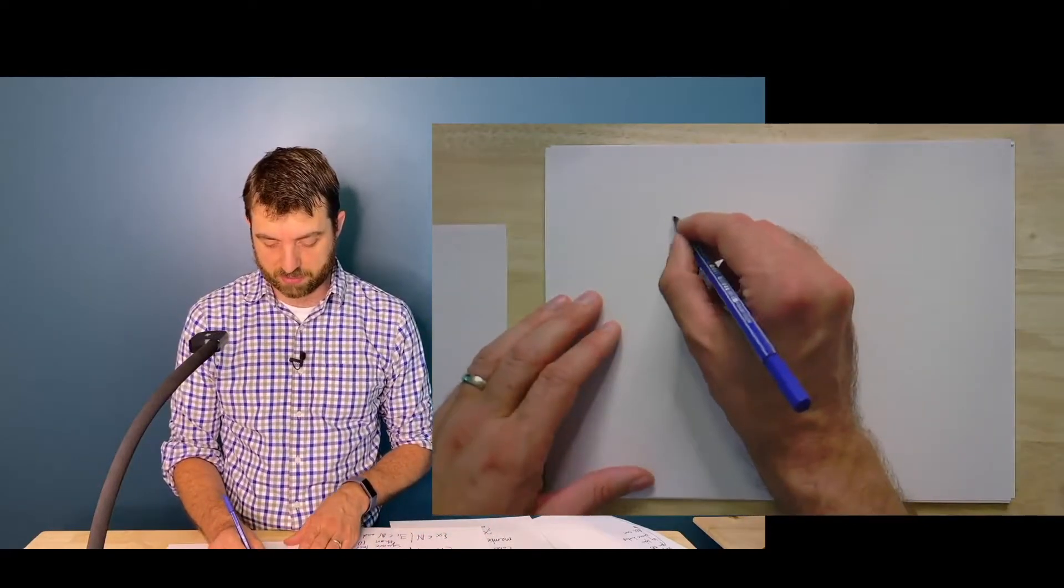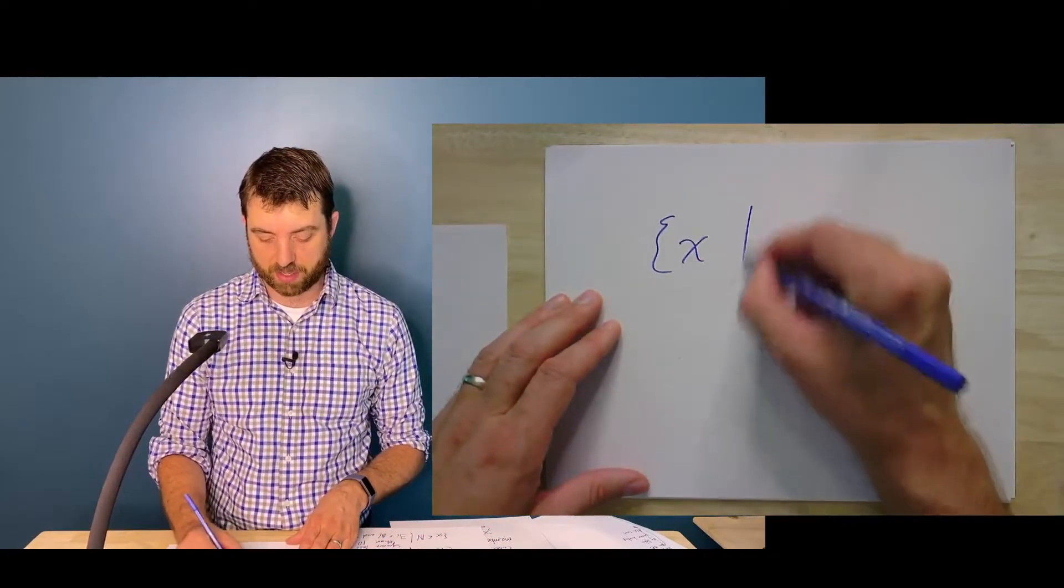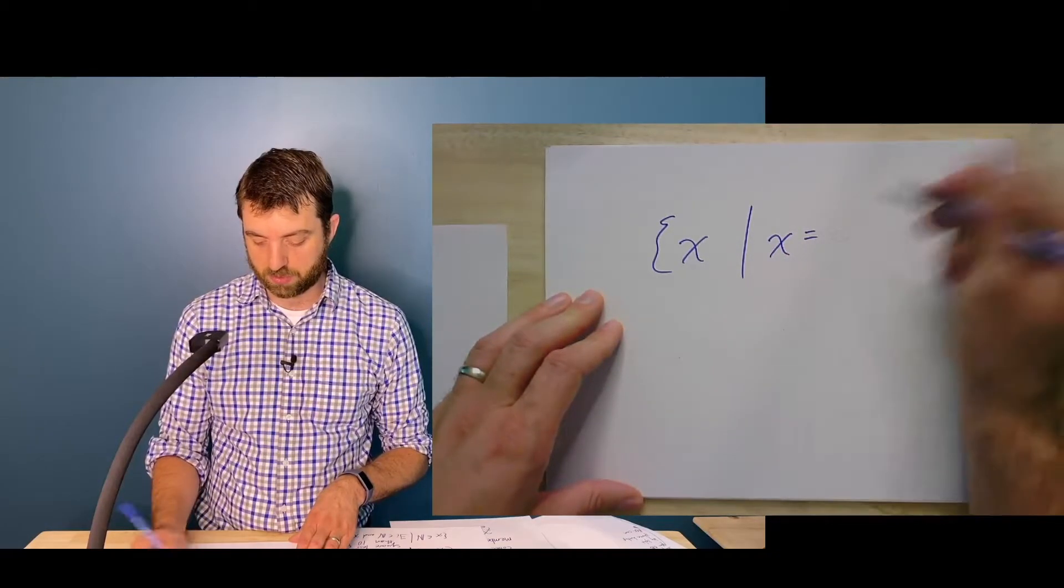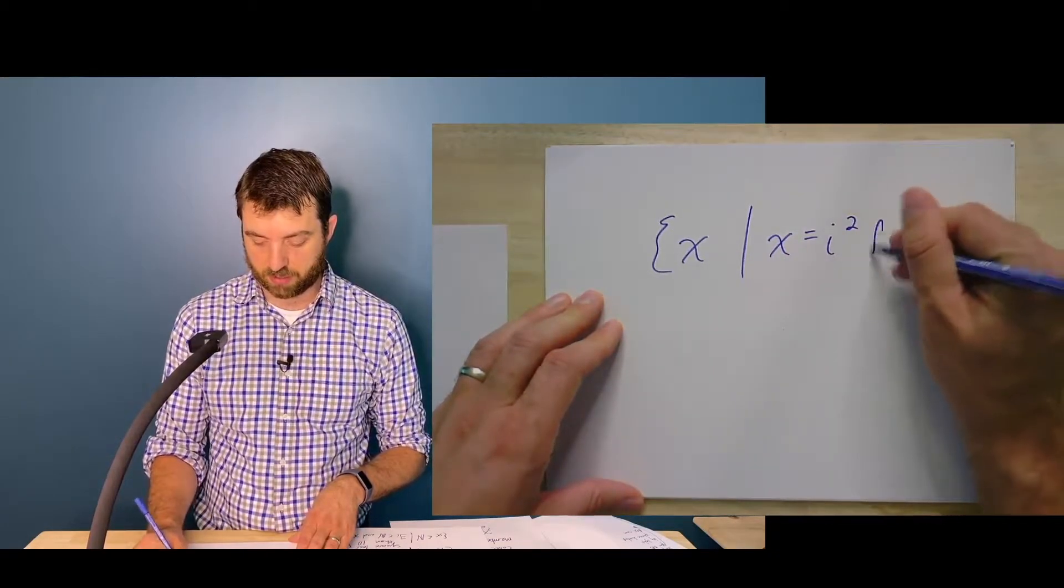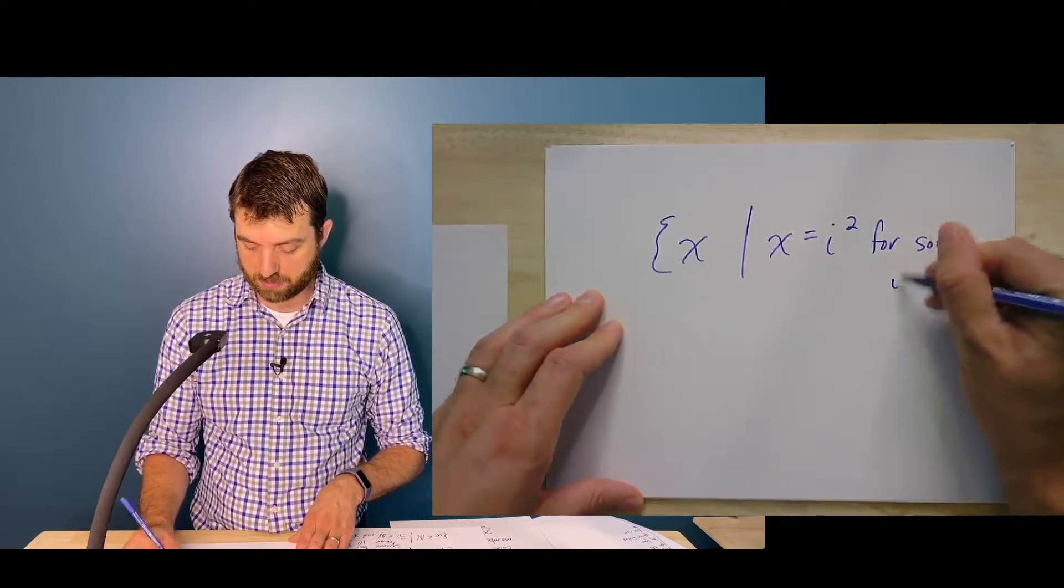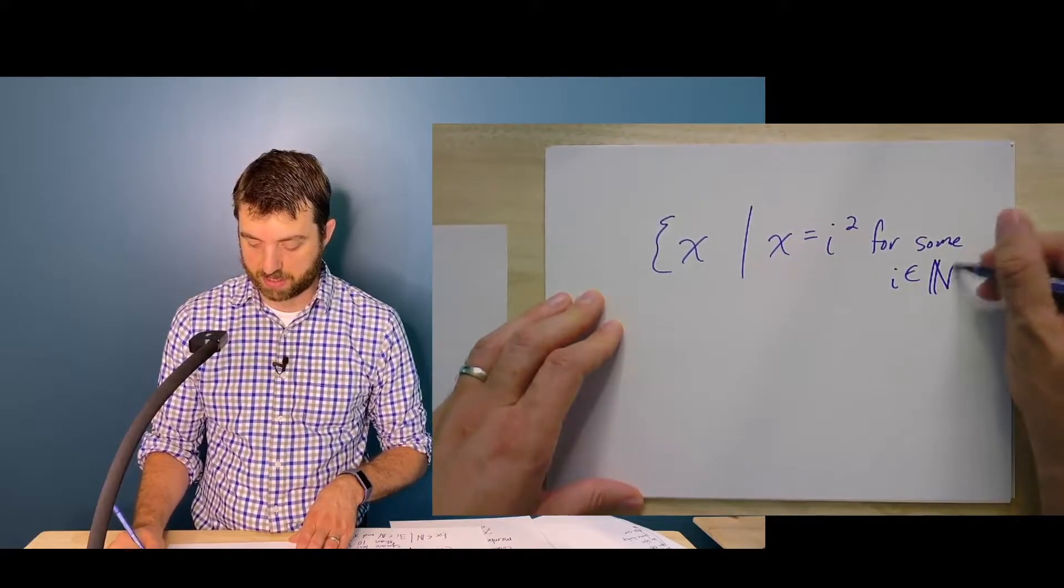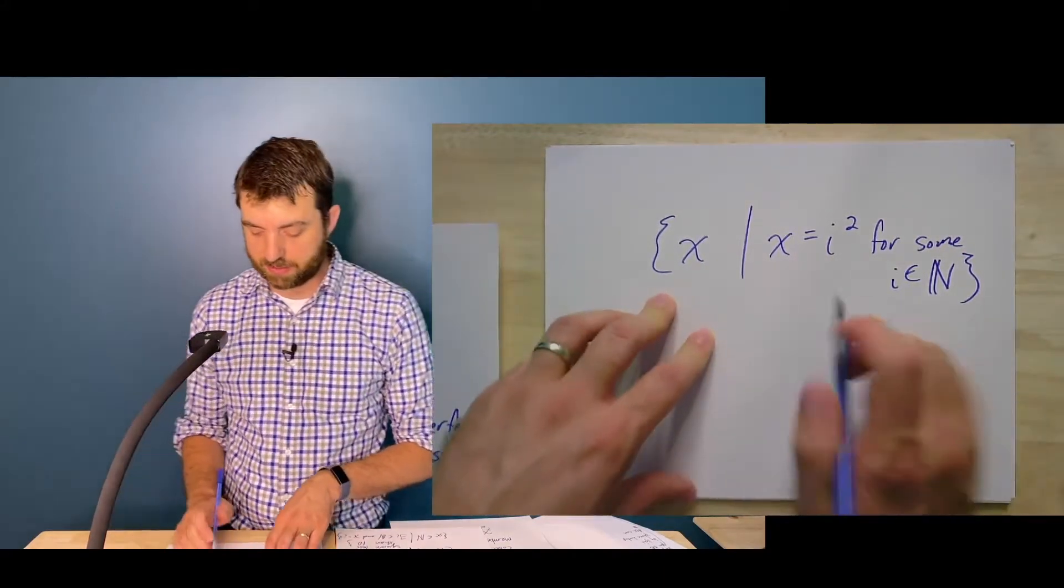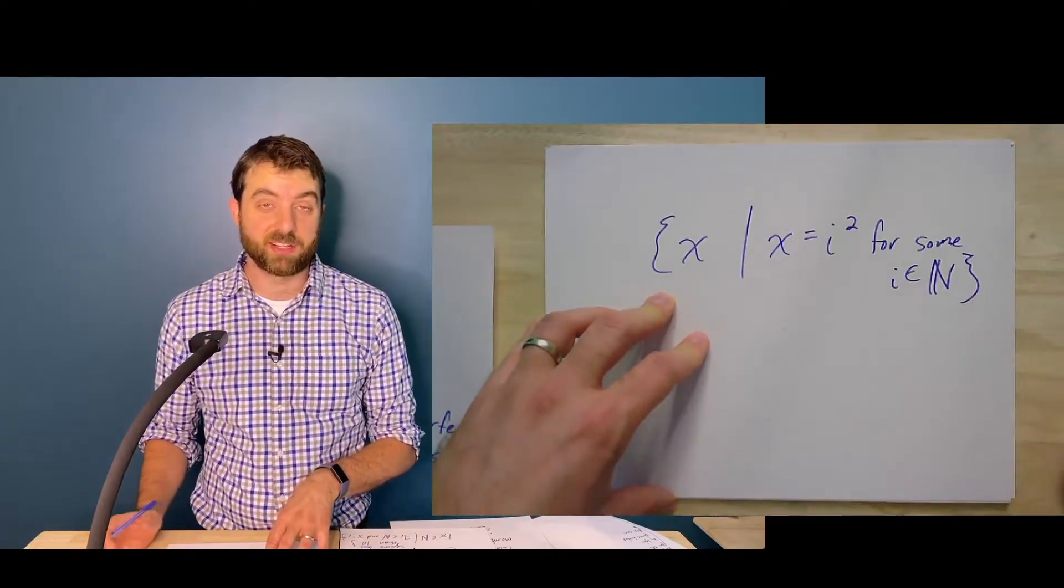So we might just write something like the set of all X such that X equals I squared for some I in N. And this is going to be okay for us as long as it's unambiguous. So when we try to say things that are mathematically precise and rigorous, as long as they're unambiguous, we can work with that.